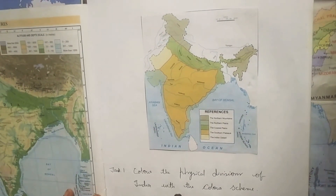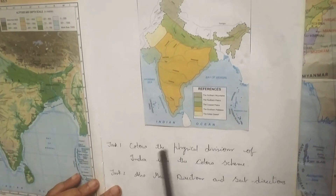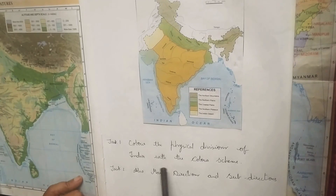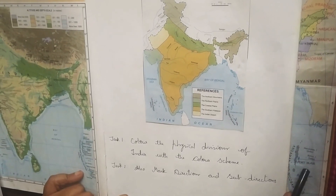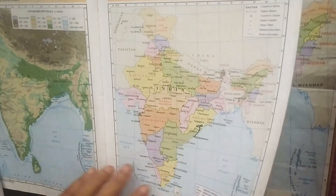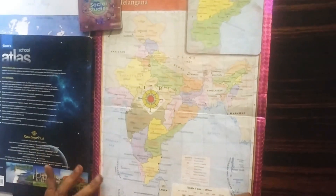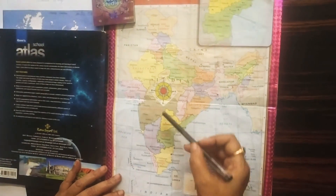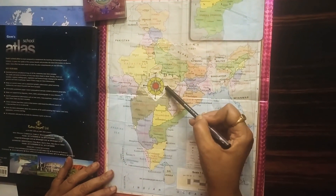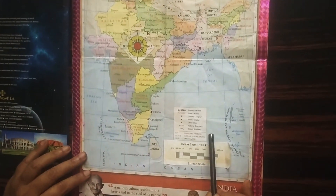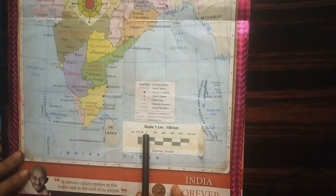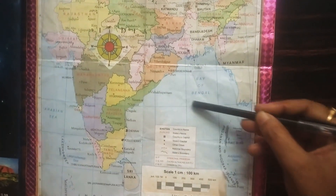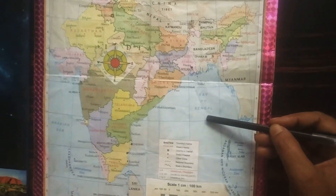The task for this lesson is: color the physical divisions of India with the color scheme you have studied, and also mark directions and sub-directions. In this map you can see the language of the map at a glance — directions (north, south, east, west), symbols (state boundary, national boundary, other cities, state capitals), scale (one centimeter is equal to 100 kilometers), and the color scheme (blue for water bodies). Thank you all children. Have a nice day.